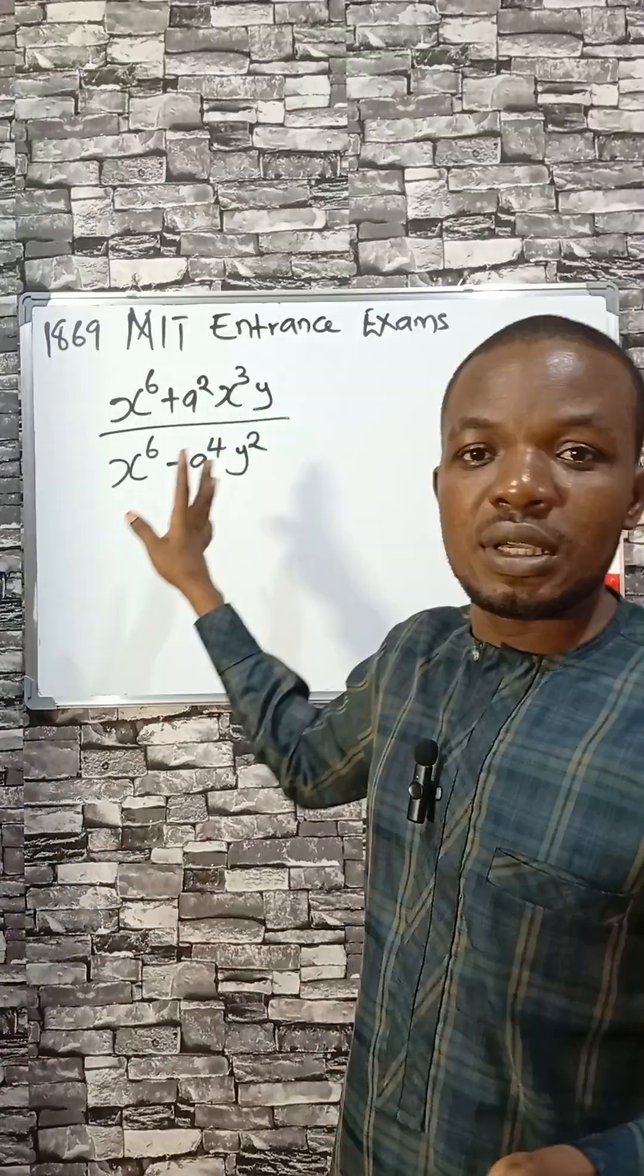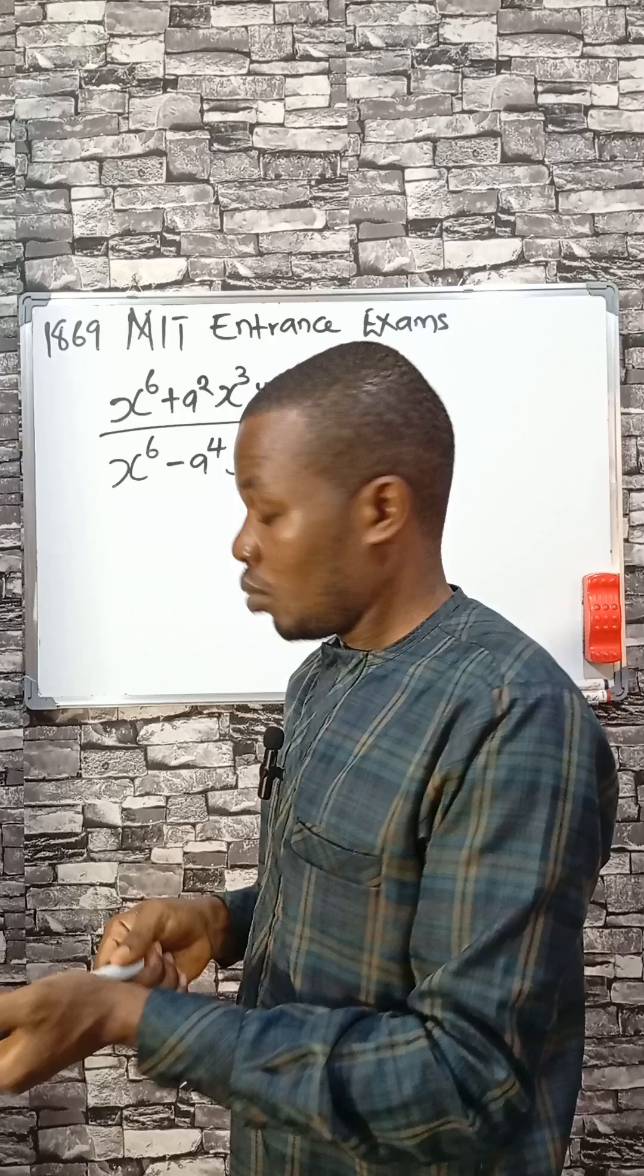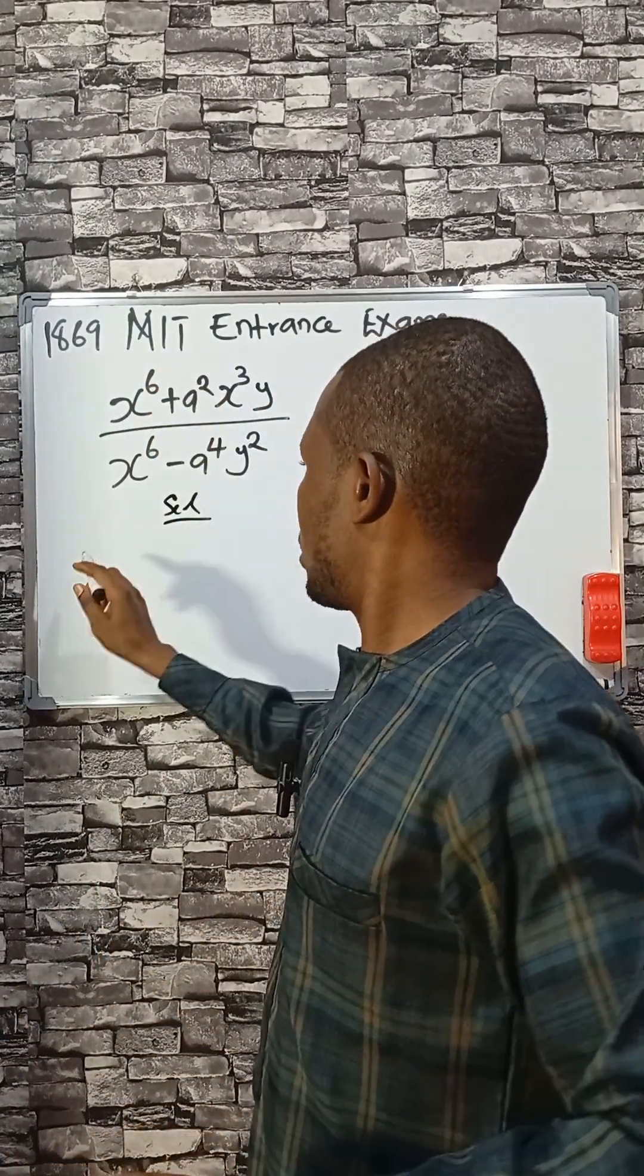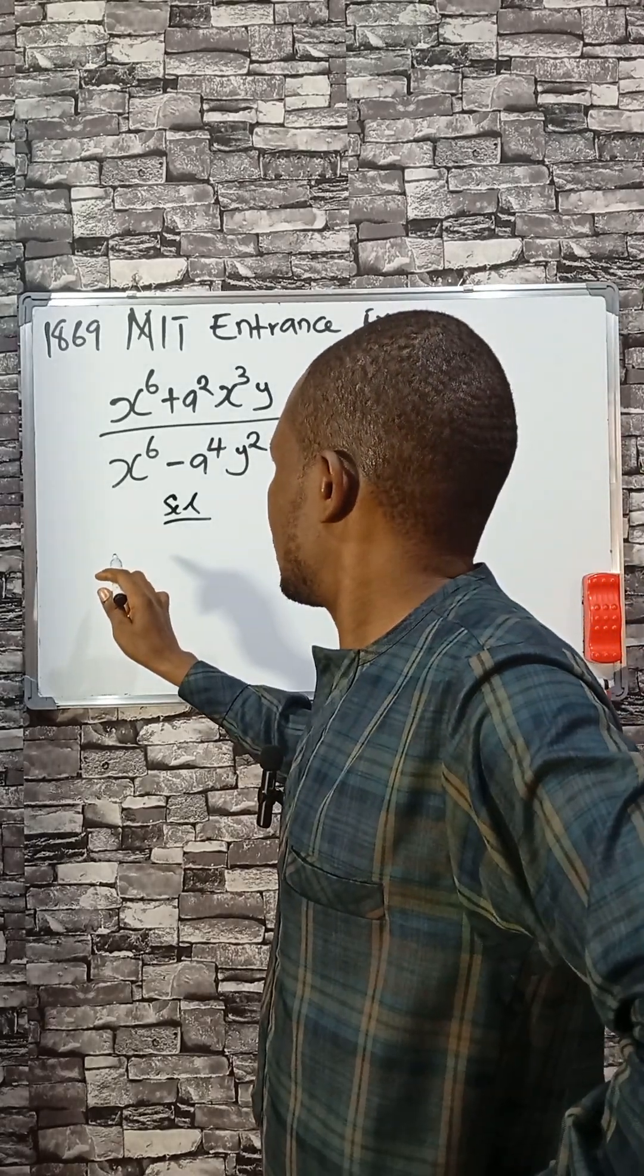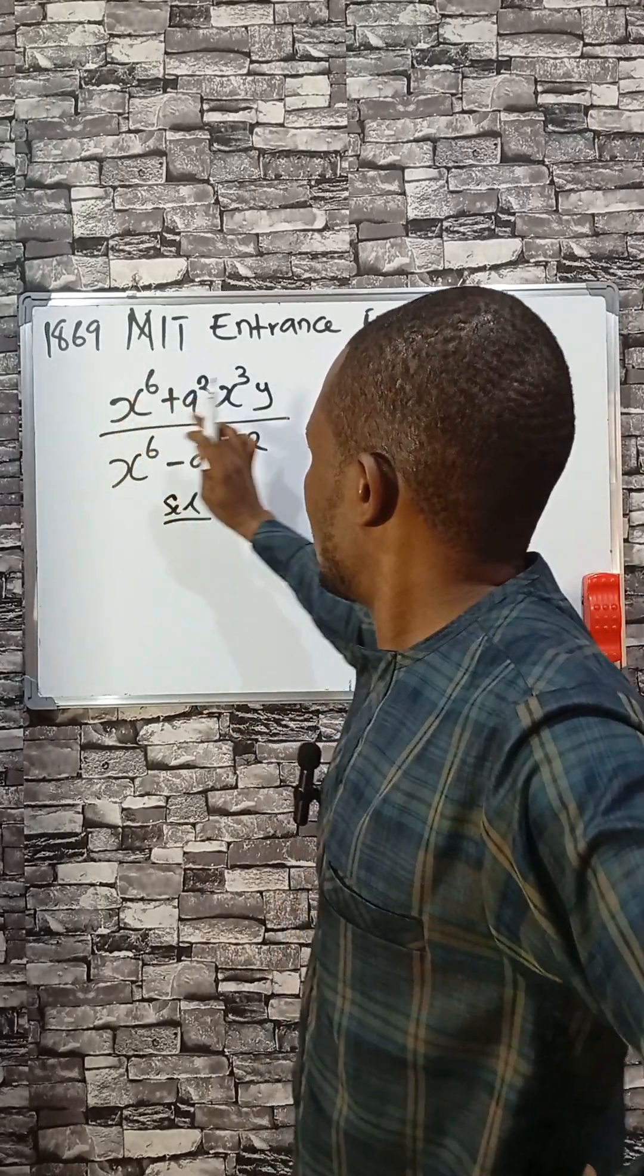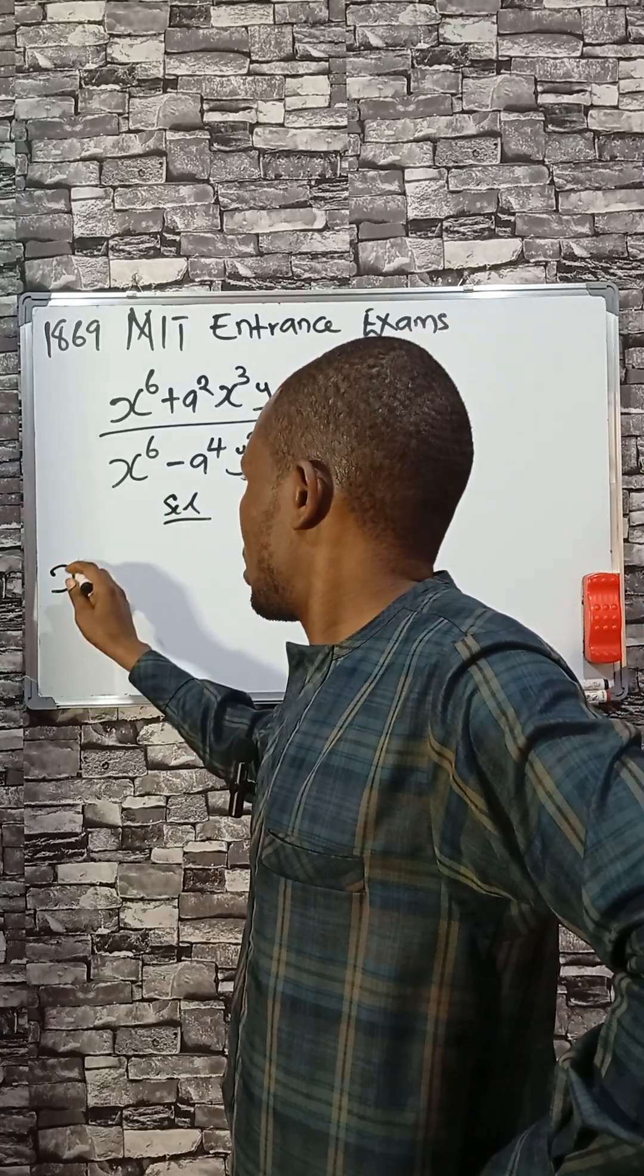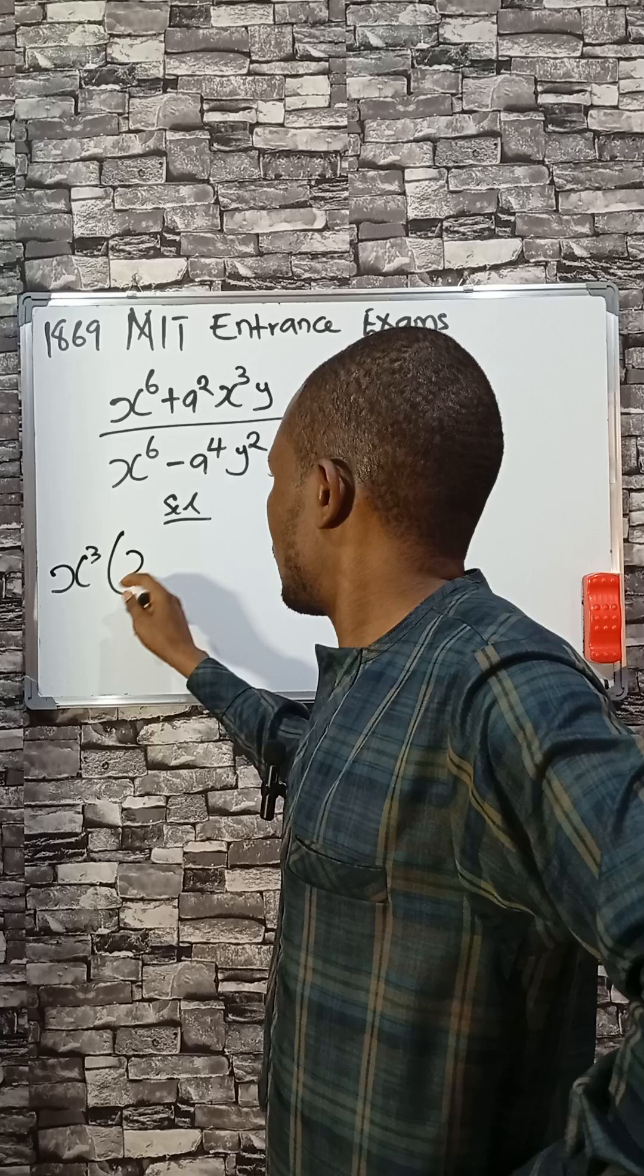Let's solve this MIT entrance examination from 1869. We can write the numerator as - you see we have x to the power 6 here and x power here. If we factorize, we have x cube, and I'm going to start with this.